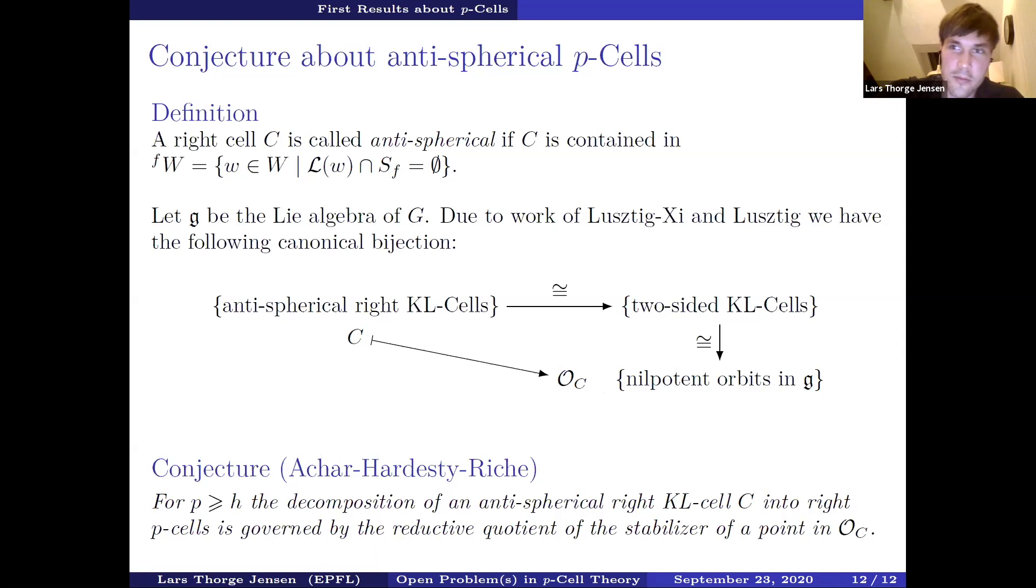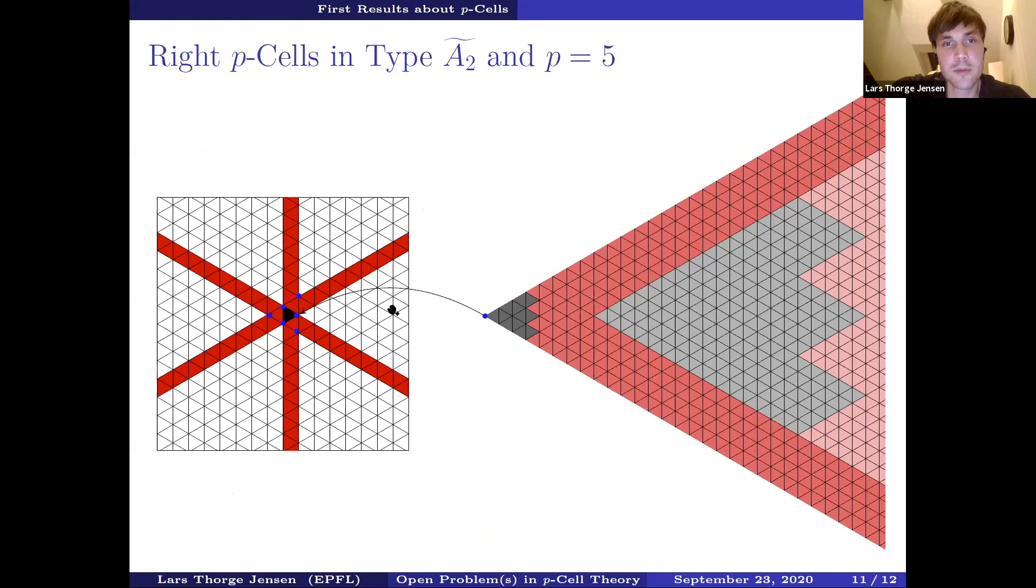Now there is a conjecture. I don't give a precise formulation, but give you an impression for this. If one wants to determine how this Kazhdan-Lusztig cell decomposes into right p-cells, what one needs to look at is one chooses a point in the corresponding nilpotent orbit, looks at the stabilizer. This has a reductive quotient, which is a reductive but potentially disconnected algebraic group. This group actually governs the decomposition behavior. What I wanted to mention, the last thing I want to say is that the last slide here is already a first example for this because the nilpotent orbit corresponding to the lowest two-sided cell is the zero orbit for which the stabilizer is just the whole group. This conjecture predicts that we have this kind of fractal-like repetitions.